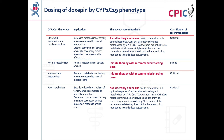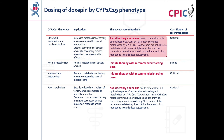These are the CPIC dosing recommendations for doxepine by CYP2C19 phenotype. Patients with a CYP2C19 ultra-rapid or rapid metabolizer phenotype will have increased metabolism of tertiary amines such as doxepine. Use of tertiary amines should be avoided in these patients. If use of a tertiary amine is warranted, therapeutic drug monitoring should be used to guide dose adjustments. This is an optional recommendation.